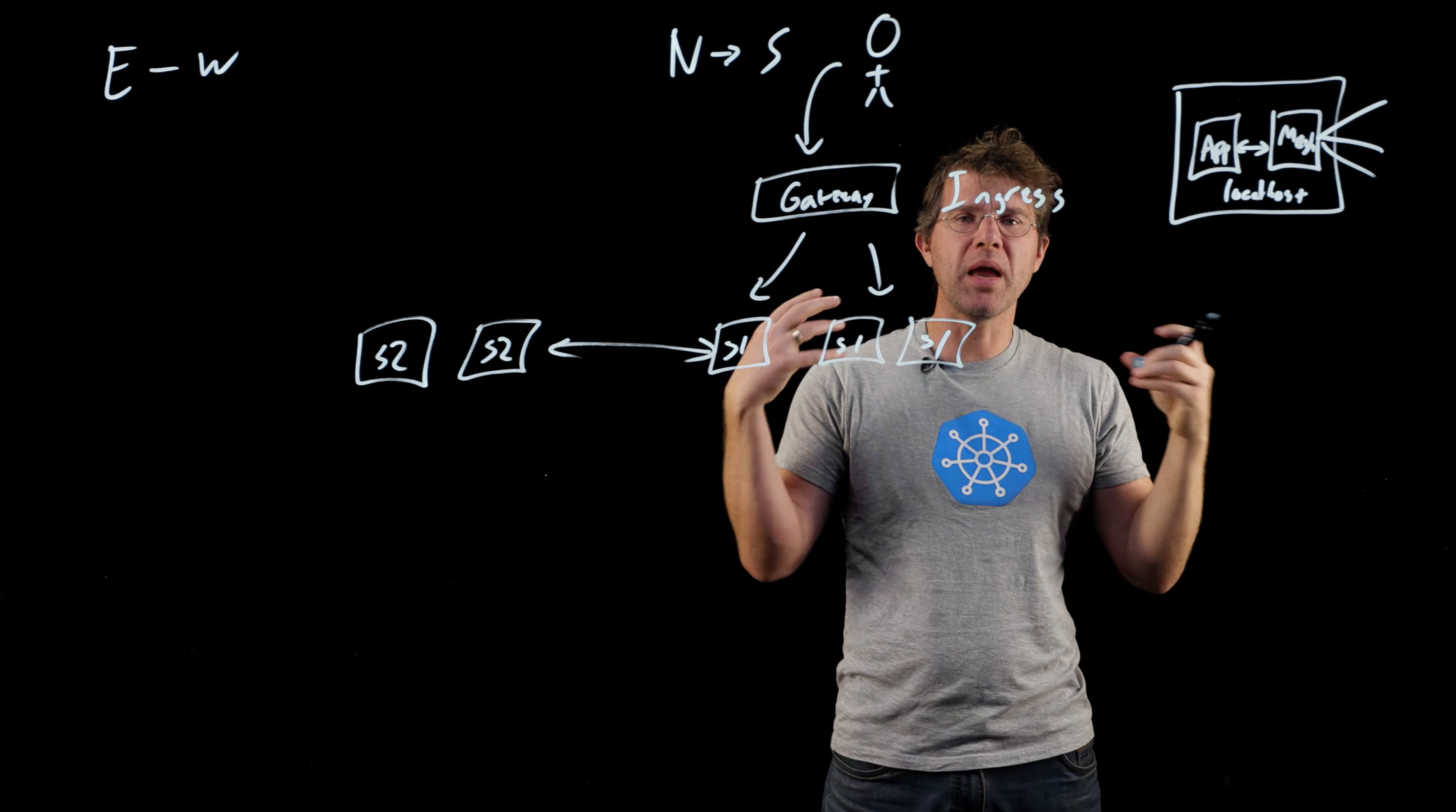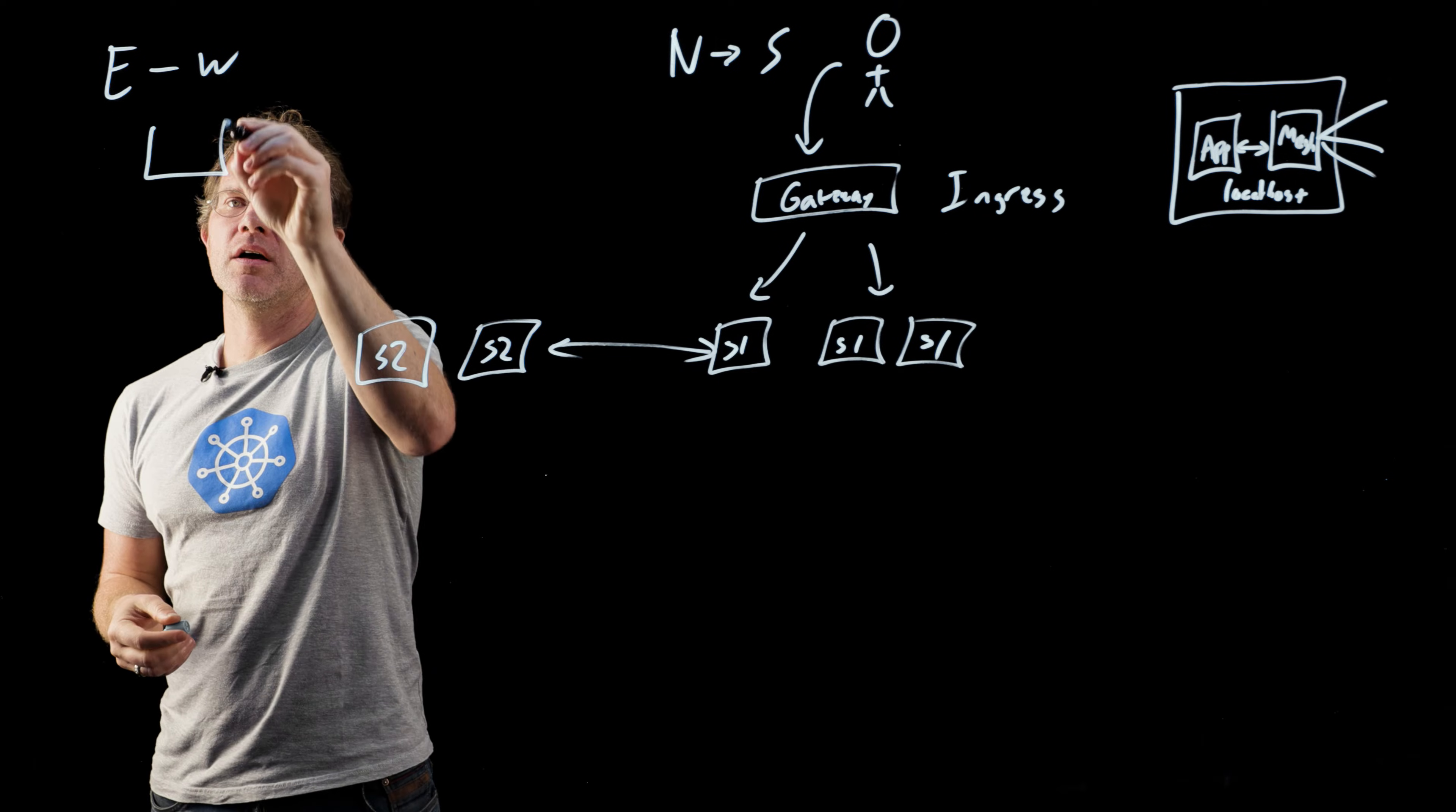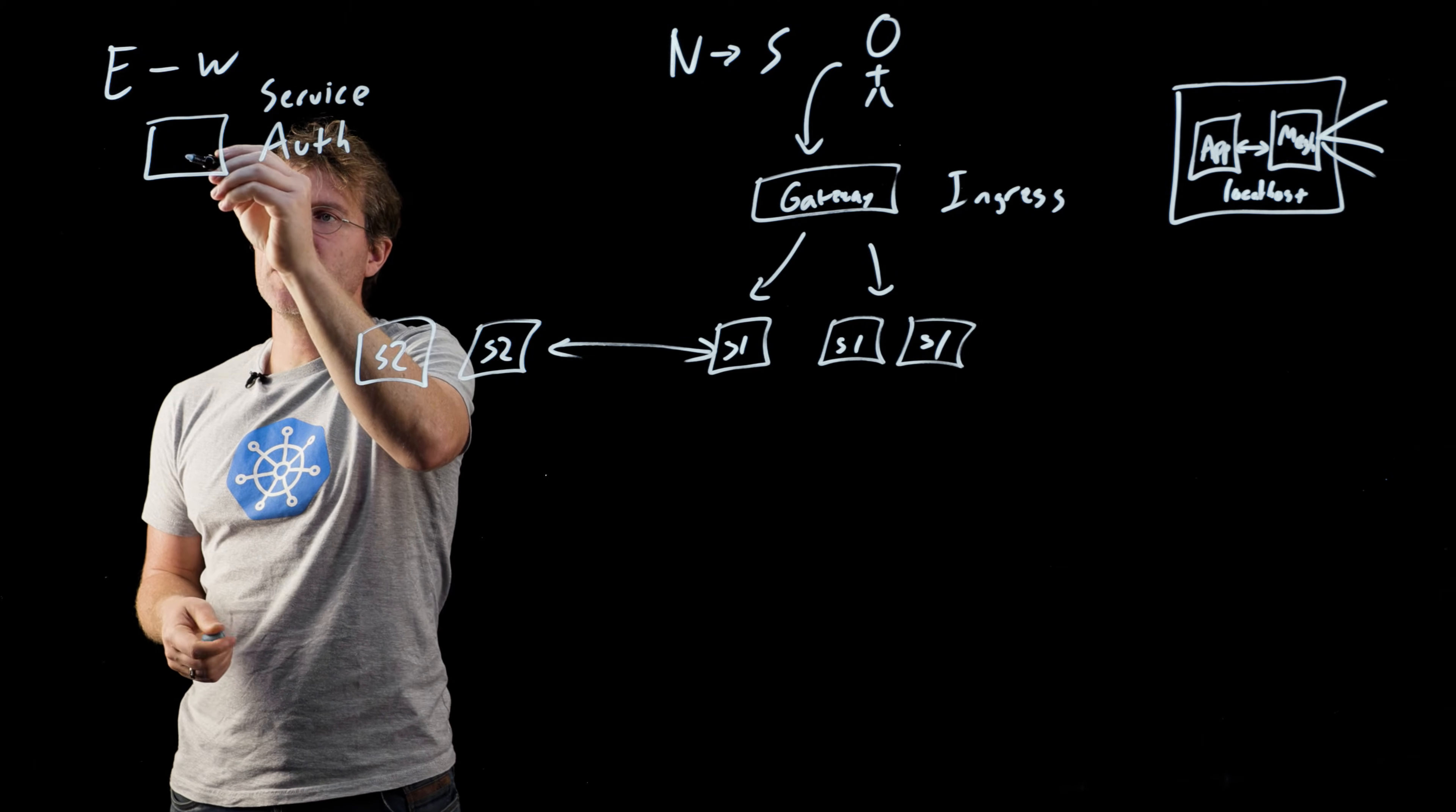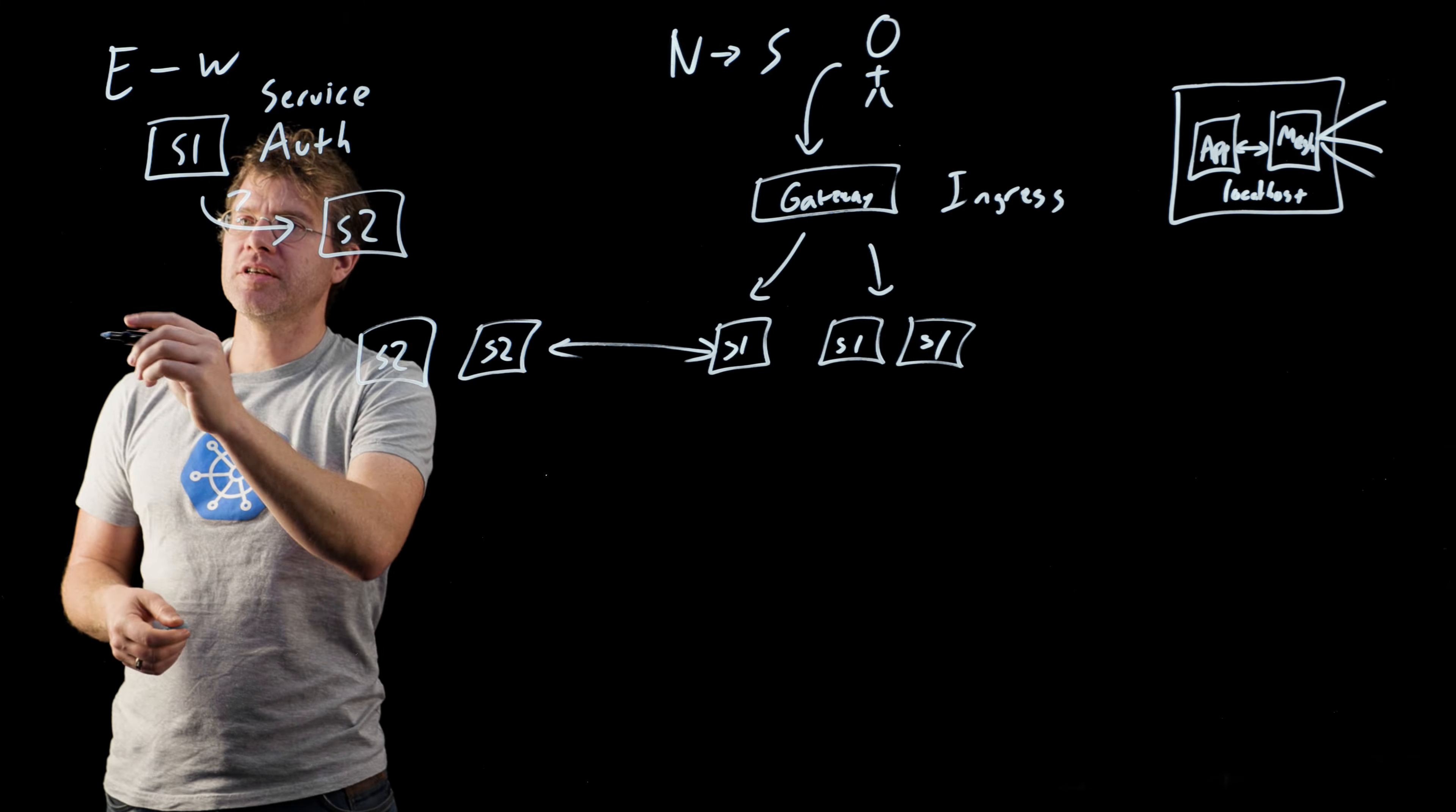What are the main characteristics that a service mesh provides to you as an application developer? Well, there's three. The first is a notion of service authorization, which basically says, if I'm service one, can I talk to service two?